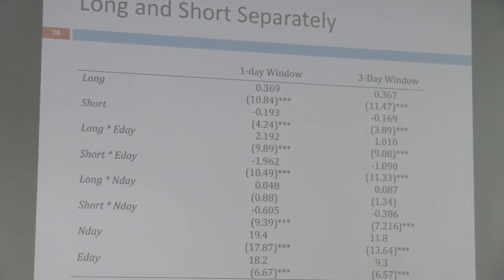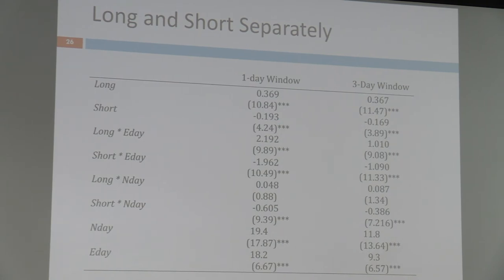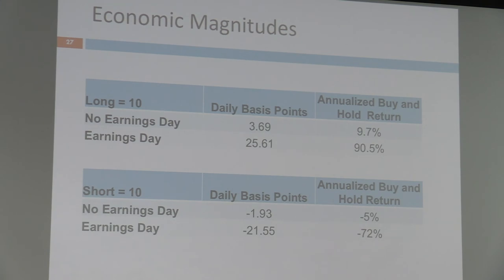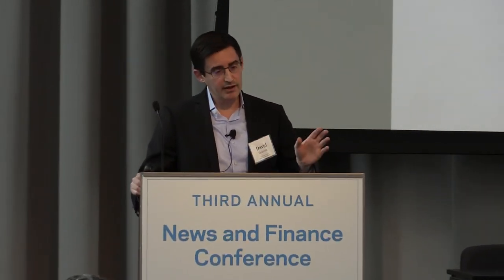We then break up long and short separately and show that this happens both on the long side and the short side. For stocks that anomalies say to buy, you find these effects. For stocks anomalies say to sell, you also find these effects — pretty symmetric. For example, stocks that anomalies say to short earn an annualized return of minus 5% on non-earnings days, and minus 72% on earnings days. We control for a lot of different things: it's not explained by day of the week, macroeconomic news — you only get this with firm-specific news — or volatility causing news. We break our anomalies into different types based on the information needed, like analyst upgrades or whether the anomaly uses only accounting data or only past stock return data. It doesn't really matter; we keep getting the same result.